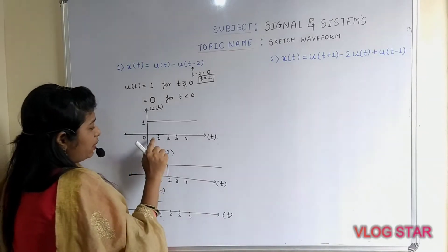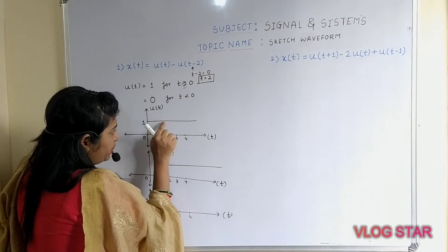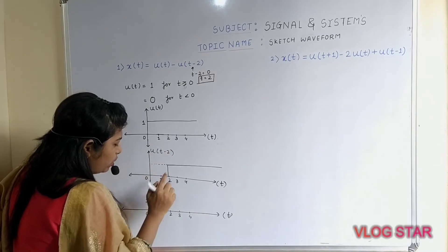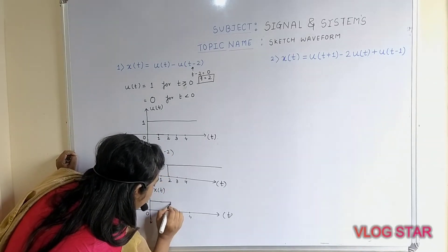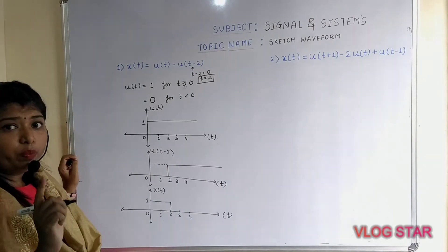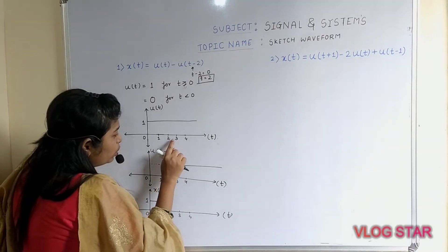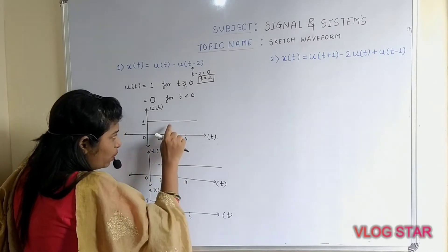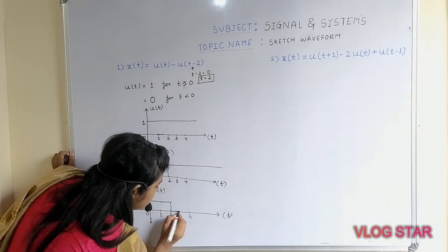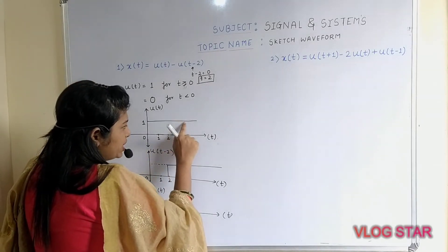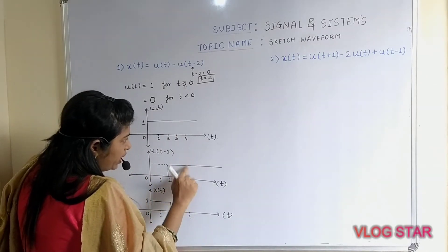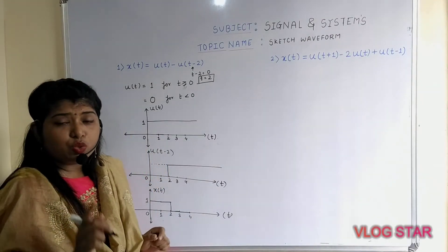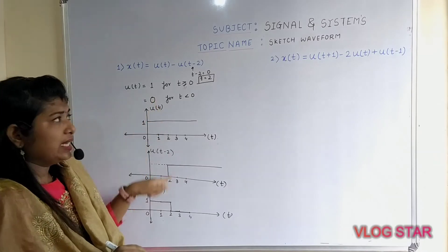For 1 to 2: u(t) amplitude is 1, u(t − 2) amplitude is 0, so 1 − 0 = 1. For 2 to 3: u(t) amplitude is 1, u(t − 2) amplitude is 1, so 1 − 1 = 0. For 3 to 4: again 1 − 1 = 0. So from 2 to 4 the amplitude is 0.